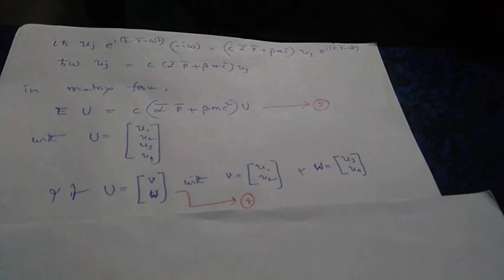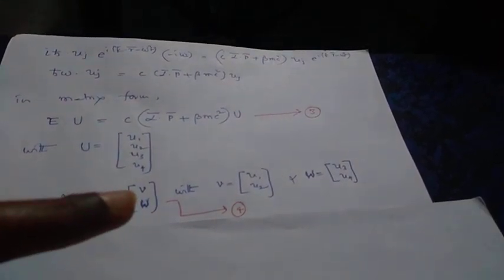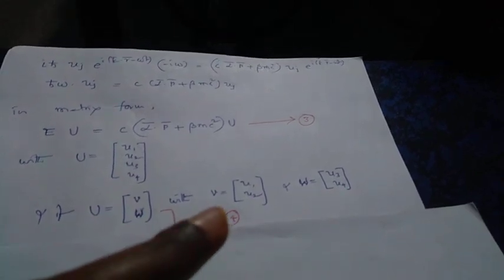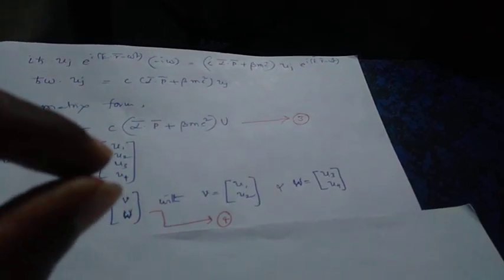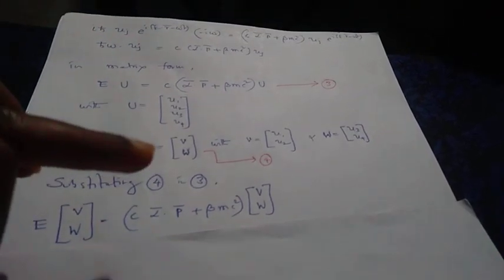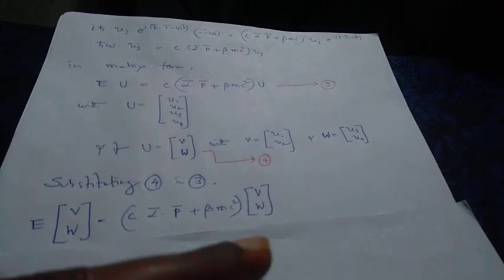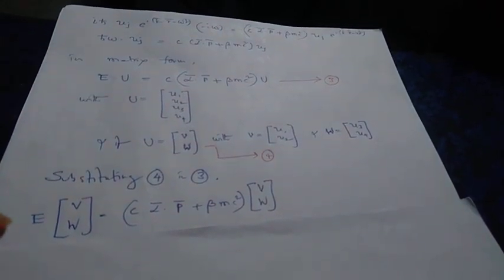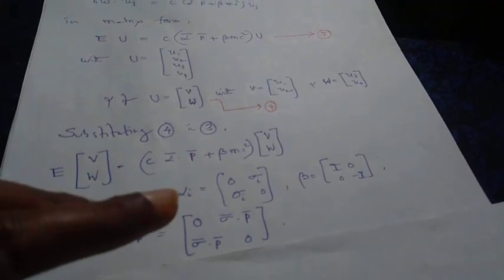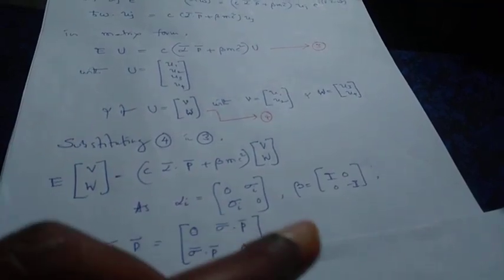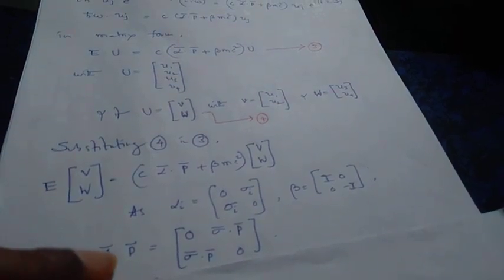We write this as equation number three. For simplicity, we define the u matrix in terms of capital V and capital W matrices, where capital V involves the first two elements of the column matrix and capital W involves the last two elements. In terms of V and W as a column matrix we rewrite equation number three. The ith component of the alpha vector can be written in terms of the Pauli matrices, and the beta matrix is written likewise, so alpha·P takes the corresponding matrix form.